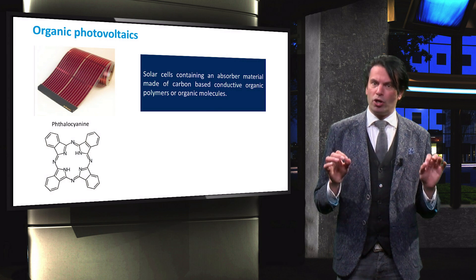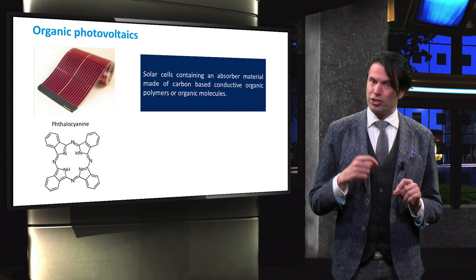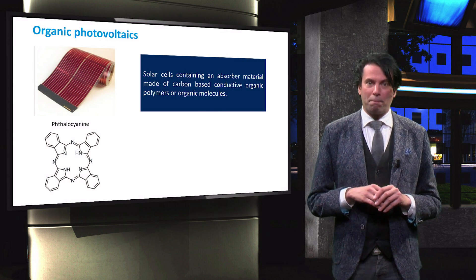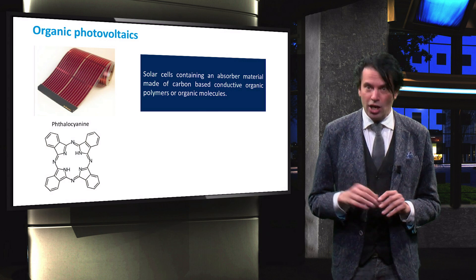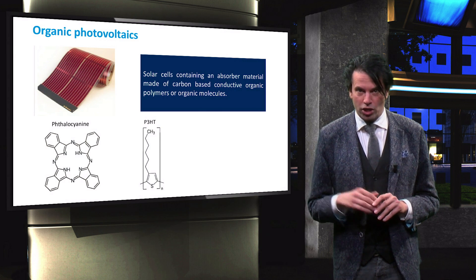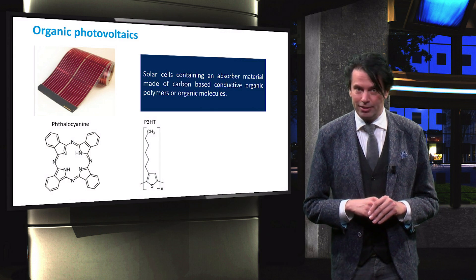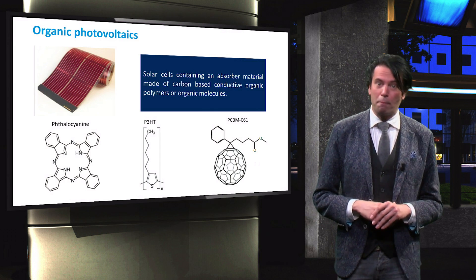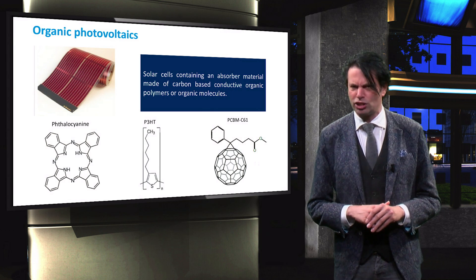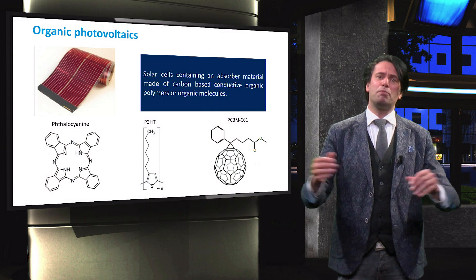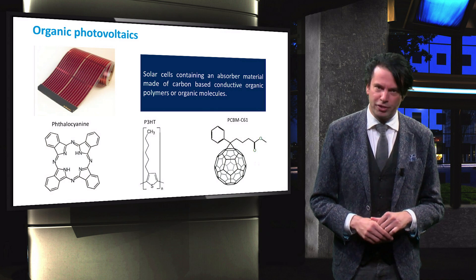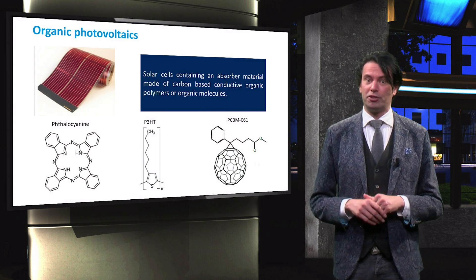The carbon polymers or molecules can form a cyclic structure such as phthalocyanine, a cyclic structure like P3HT, or a mixed copolymer structure such as PCBM C61. The various carbon structures produce different absorber materials, with varying material properties.